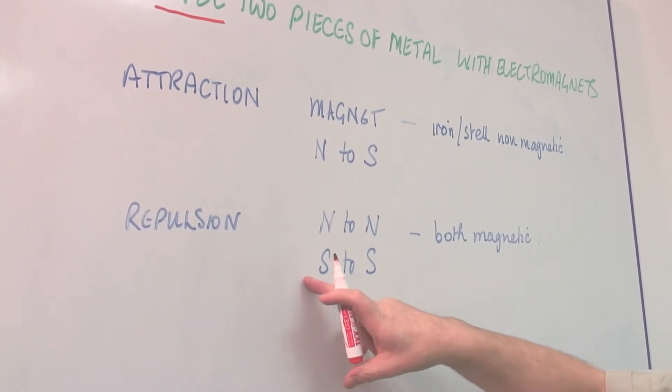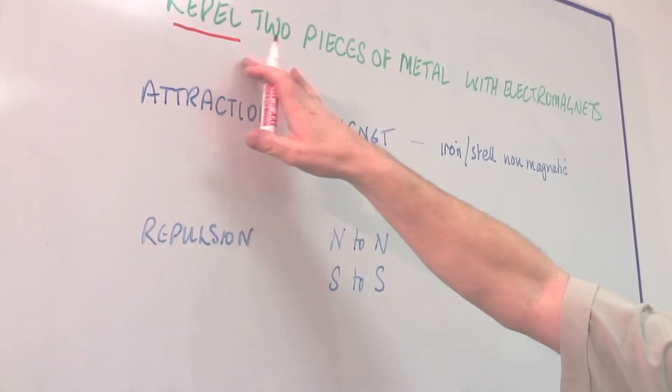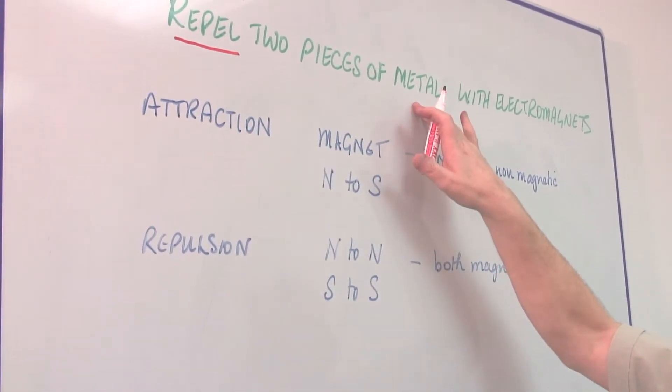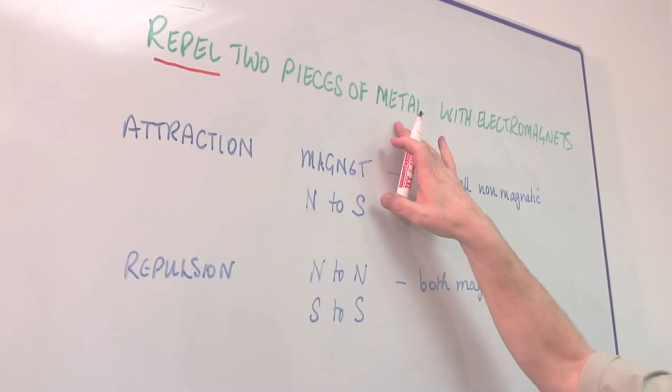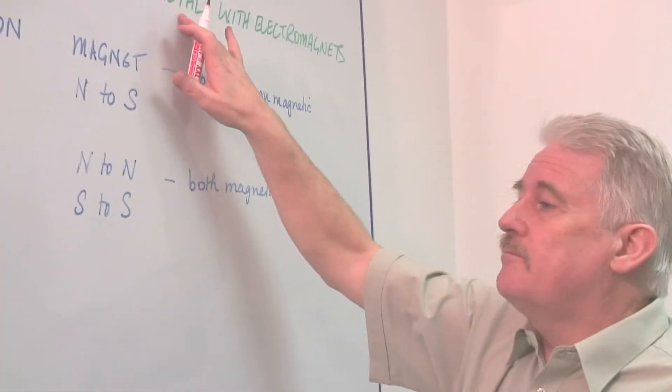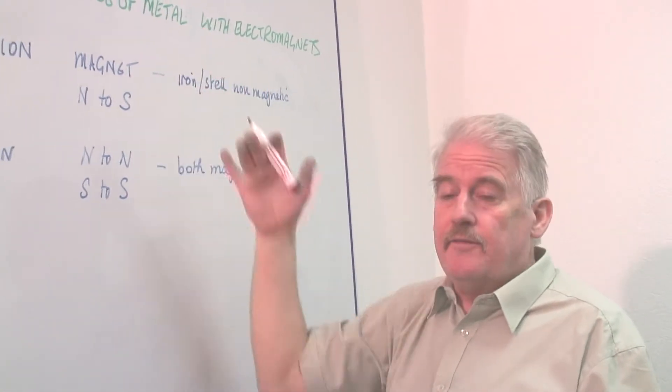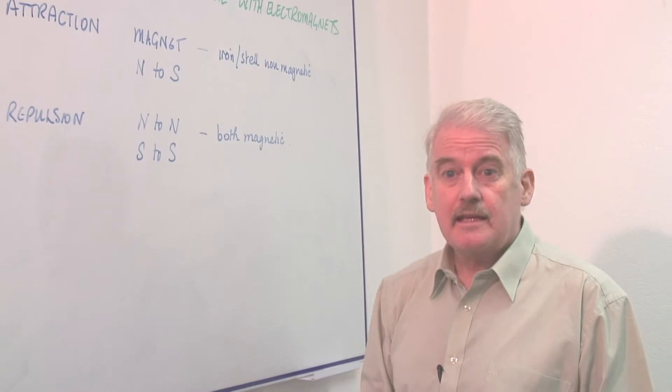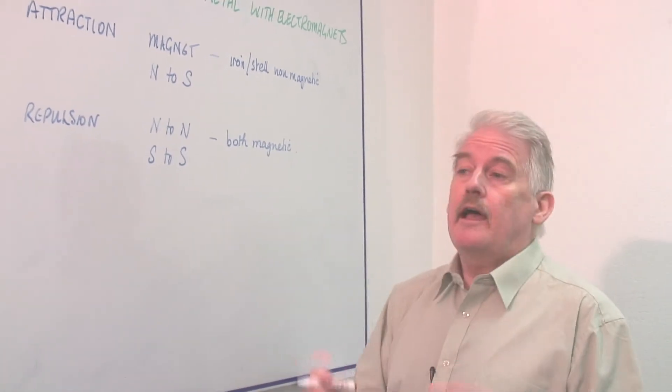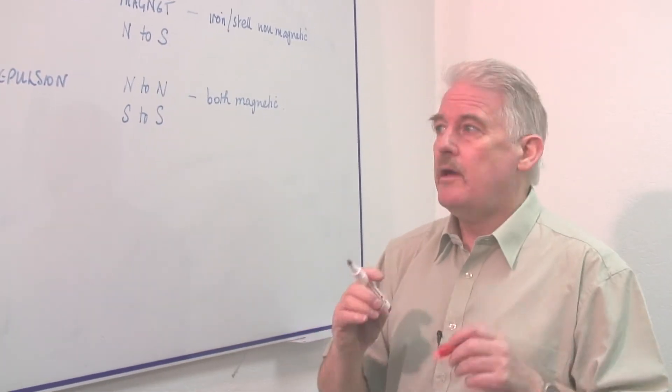So we've got to be very careful about this because we can't actually get two pieces of unmagnetic metal to repel because automatically a piece of metal, if it is not magnetic, if it's brought near to a magnet, it becomes magnetic and it becomes magnetic so that it will attract. It will never repel.